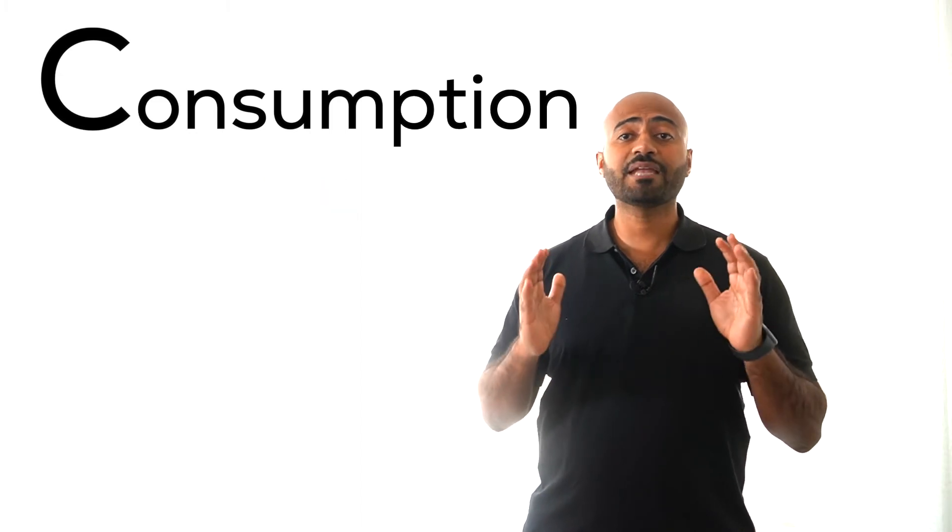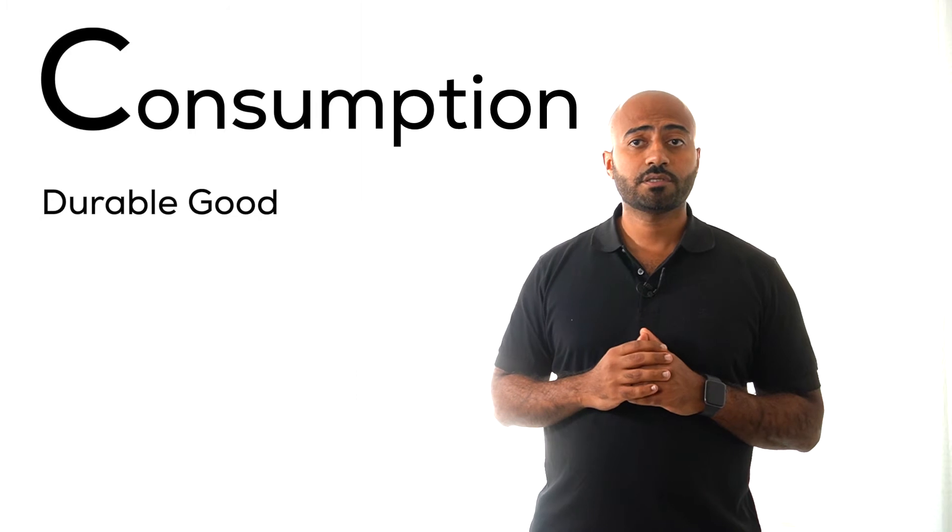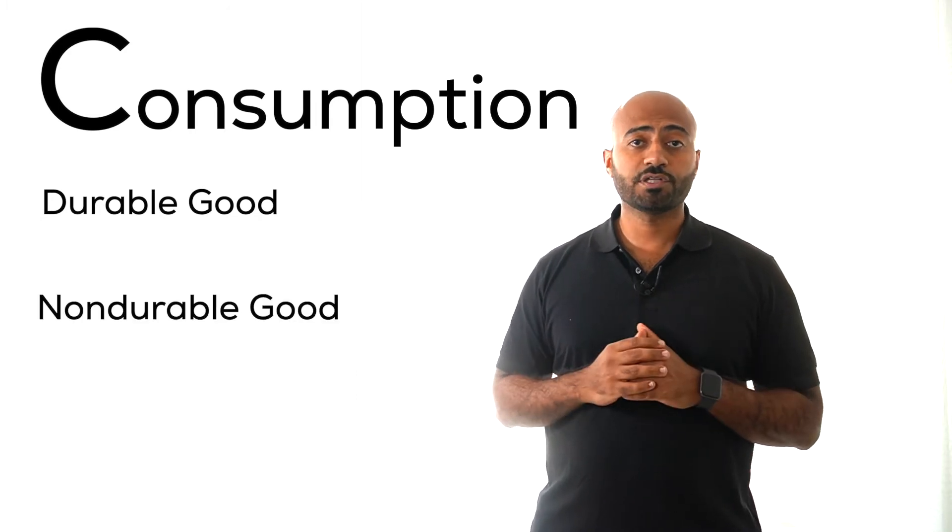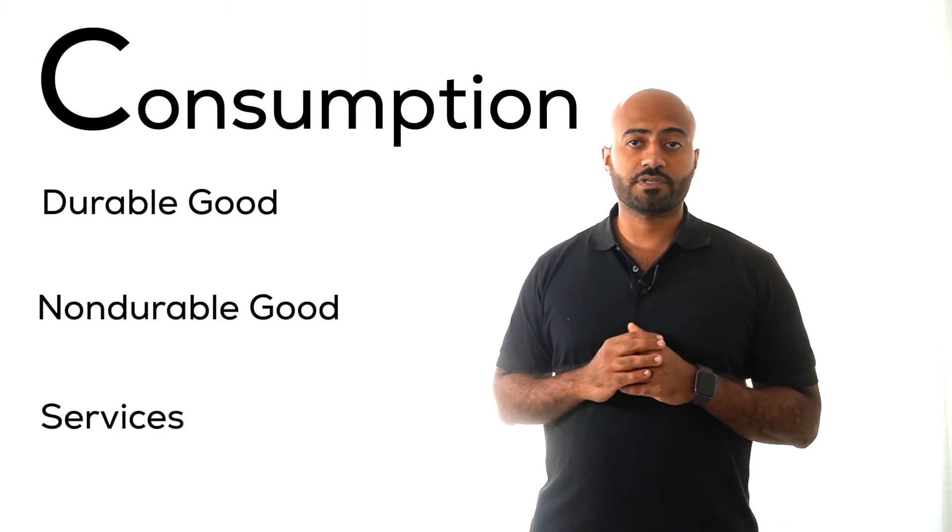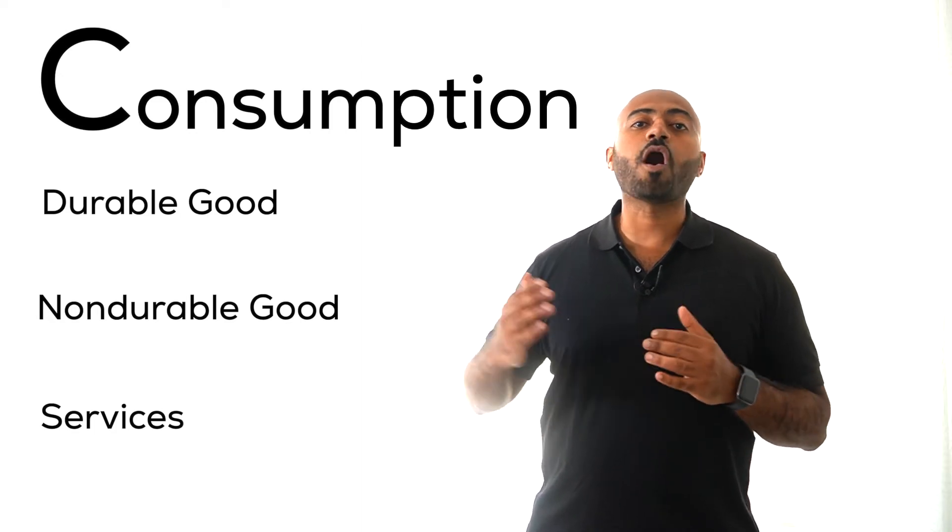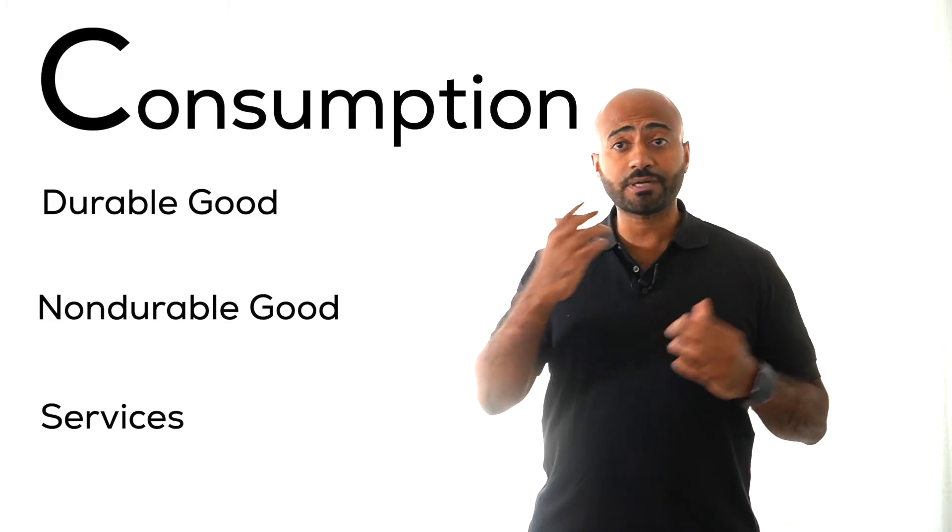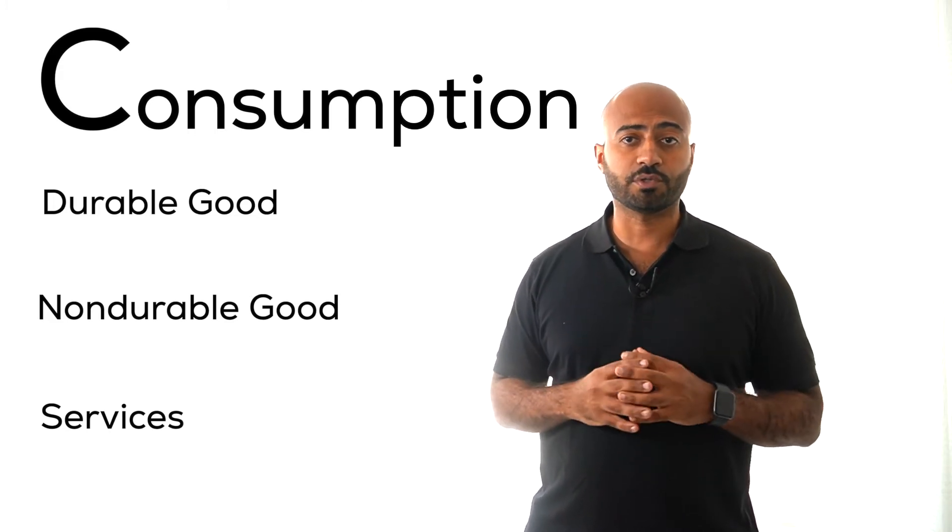Consumer spending can be broken down to three types: spending on durable goods, spending on non-durable goods, and spending on services. Durable goods are goods that last long periods of time. Goods like cars, electronics, furniture, and appliances are examples of durable goods.